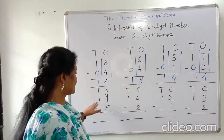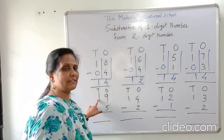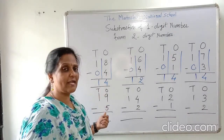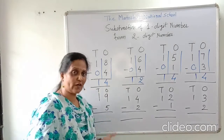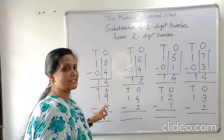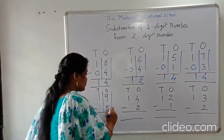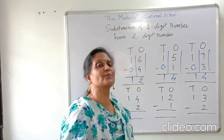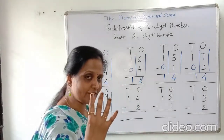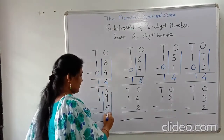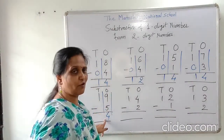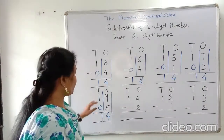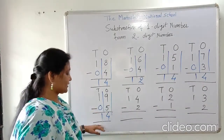Let's see another example. Here is the number nineteen. I write one in tens place and nine in ones place. We have to subtract single digit five from nineteen, so first we write five in ones place. We have to subtract five from nine. Let's count: five, six, seven, eight, nine — how many fingers are remained? Four. So nine minus five, answer is four. In tens place, one minus zero is one. So nineteen minus five, answer is fourteen.